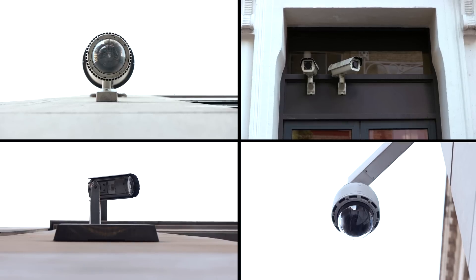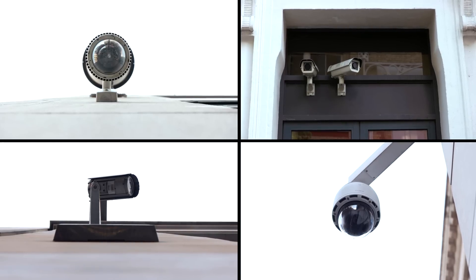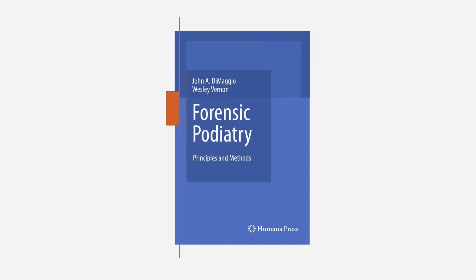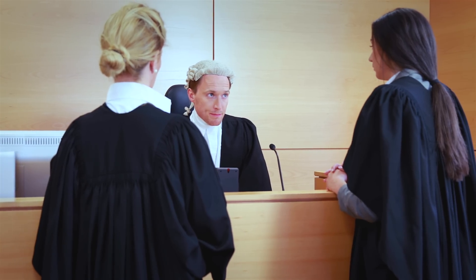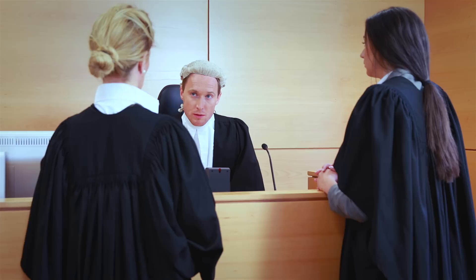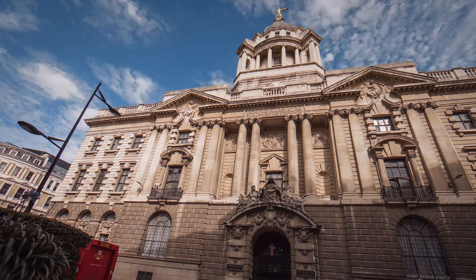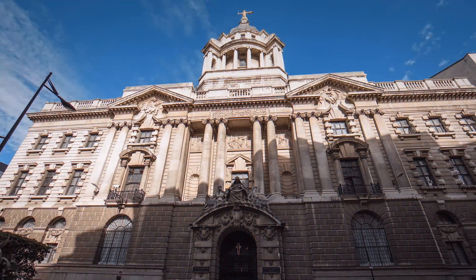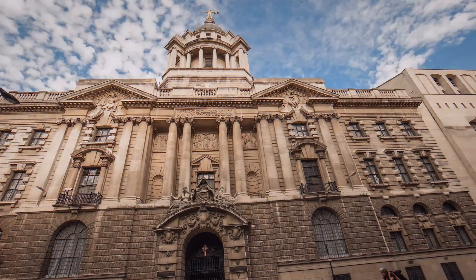Commonly the images are found on CCTV footage from the scene. Forensic gait analysis was first used in 2000 by UK podiatrist Hayden Kelly, when for the first time this form of identification evidence was admissible in a criminal court. This case was heard at the Old Bailey in London and was widely reported in the media.